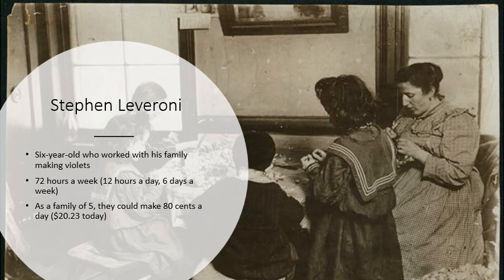Let's look at some stories of people who worked in this early industrial era. Here's a story of Stefan Leveroni, a six-year-old who worked with his family making violets out of cloth to sell. They worked 72 hours a week — 12 hours a day, six days a week — and as a family of five, they could make about 80 cents a day.